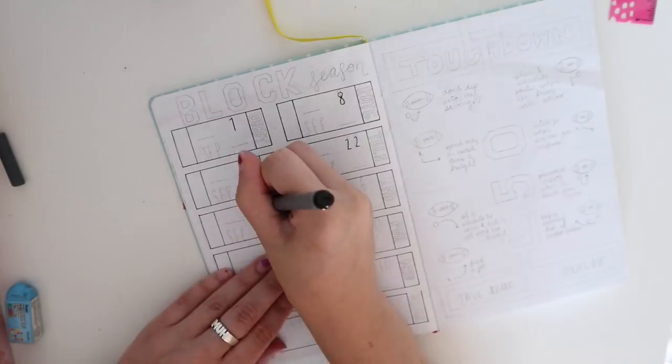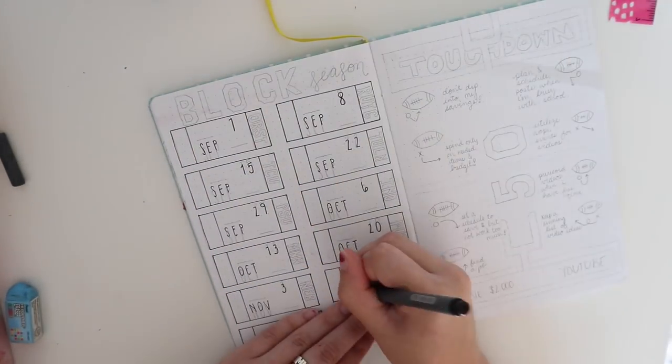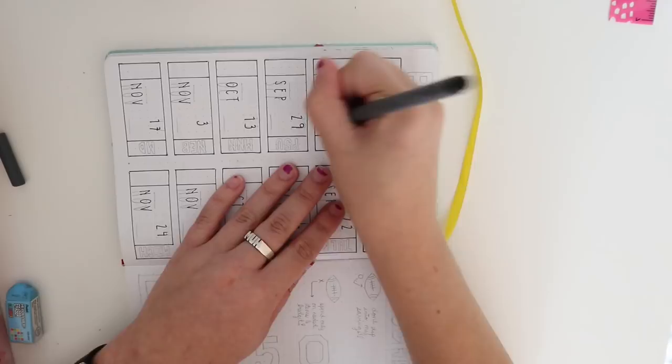So I decided to draw tickets for each game that OSU will be playing with the date that they're going to be playing on and two lines inside the ticket for me to keep score of the home and away team.